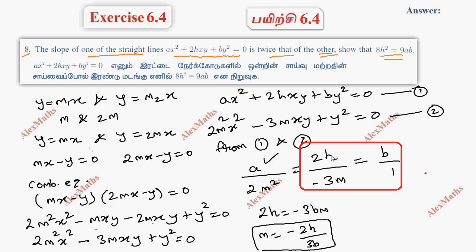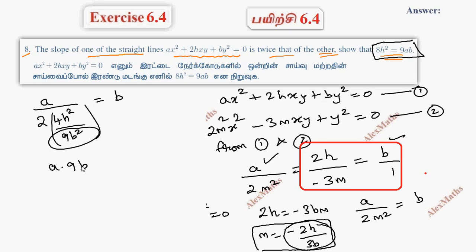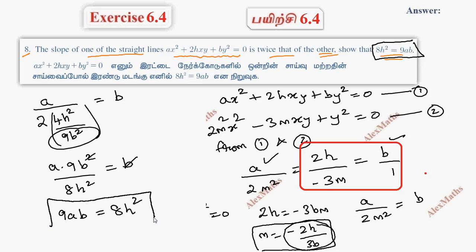Now using the first and last term comparison: A / 2M² = B. Substituting M = −2H/3B, we get A / 2 × (4H²/9B²) = B, which gives 9AB² / 8H² = B. Cancelling B, we get 9AB = 8H², i.e., 8H² = 9AB. Hence proved.